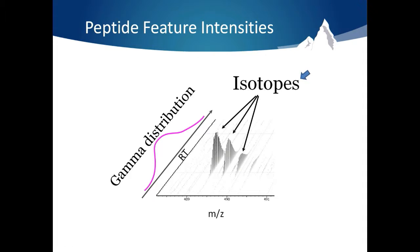It will have a visible and predictable isotopic distribution resulting from different carbon isotopes and its intensity will follow gamma distribution across the retention time range in which it elutes. If the signal from the mass spec has these characteristics we call it a peptide feature.